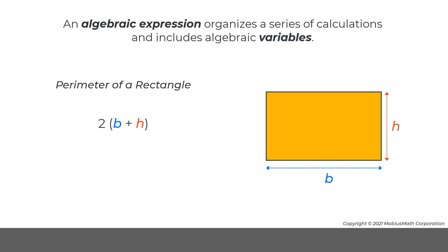In this expression, there are two variables, b and h. Values for these variables can be substituted into the expression and the resulting numerical expression can be evaluated. If the base of the rectangle is b equals 5 and the height is h equals 3, the expression evaluates to 16.